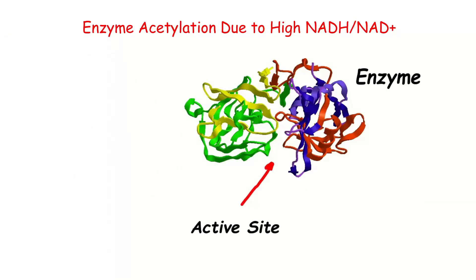When you look at enzymes, this is a 3D picture of a blob-like enzyme, and it has this groove in it — that's the active site of the enzyme. That's where the enzyme is going to use a lock-and-key model to match with whatever its substrate is, and it's going to catalyze some reaction.